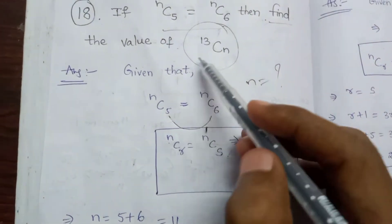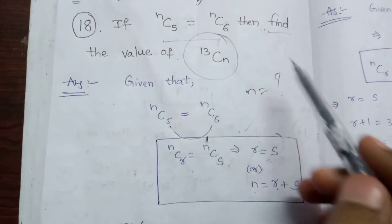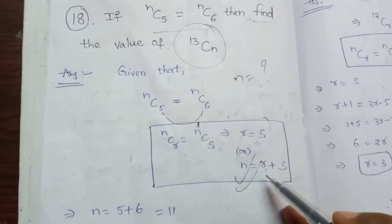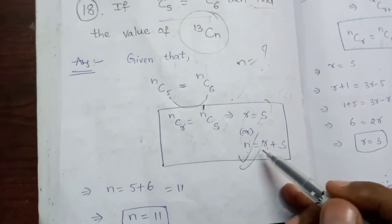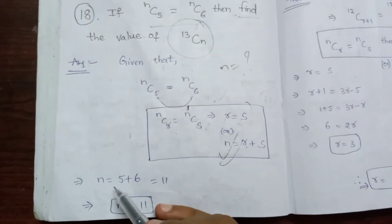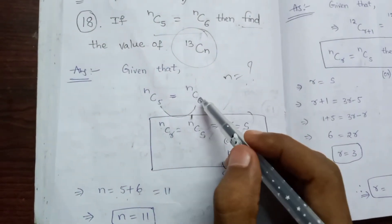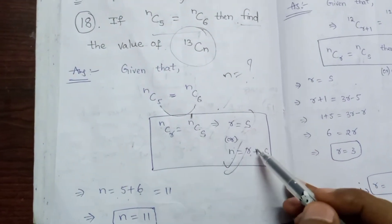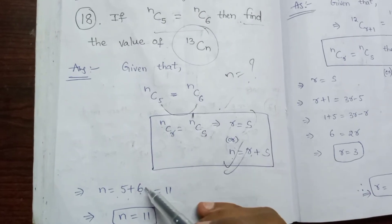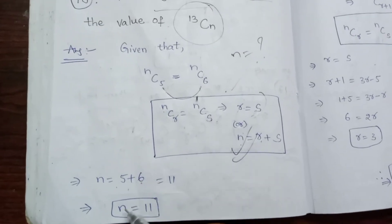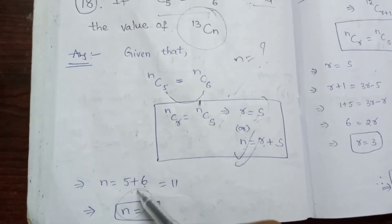We will find the value of n. So n is equal to r plus s. Here r is equal to 5 and s is equal to 6, so 5 plus 6 is equal to 11. Therefore n is equal to 11.